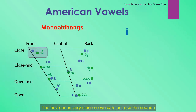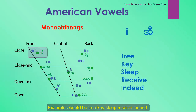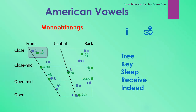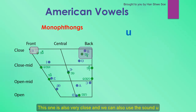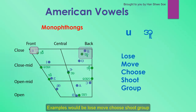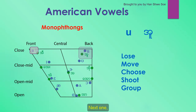The first monophthong is very close to the Burmese sound E. Examples would be: tree, keep, sleep, receive, indeed. The next one is also very close, and we can use the sound U. Examples would be: lose, move, choose, shoot, group.